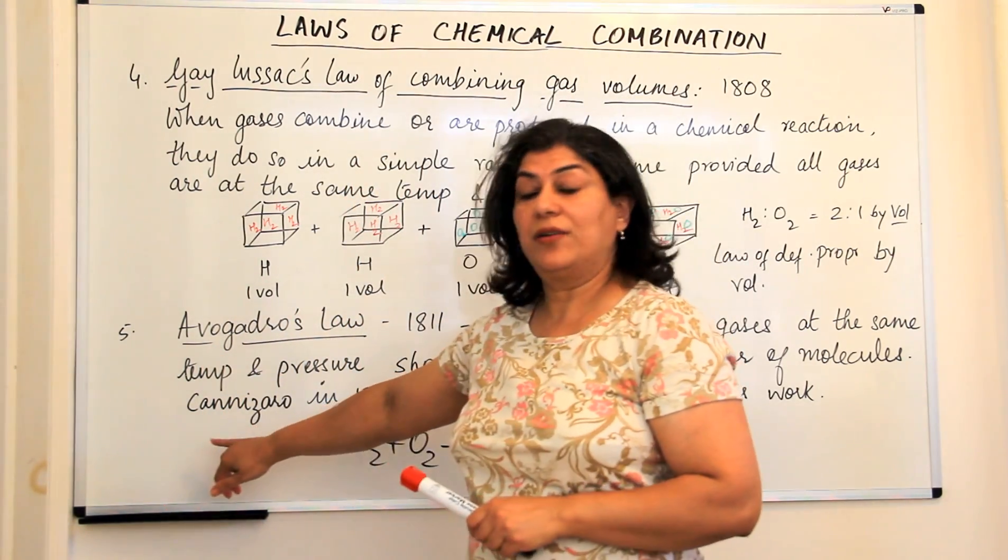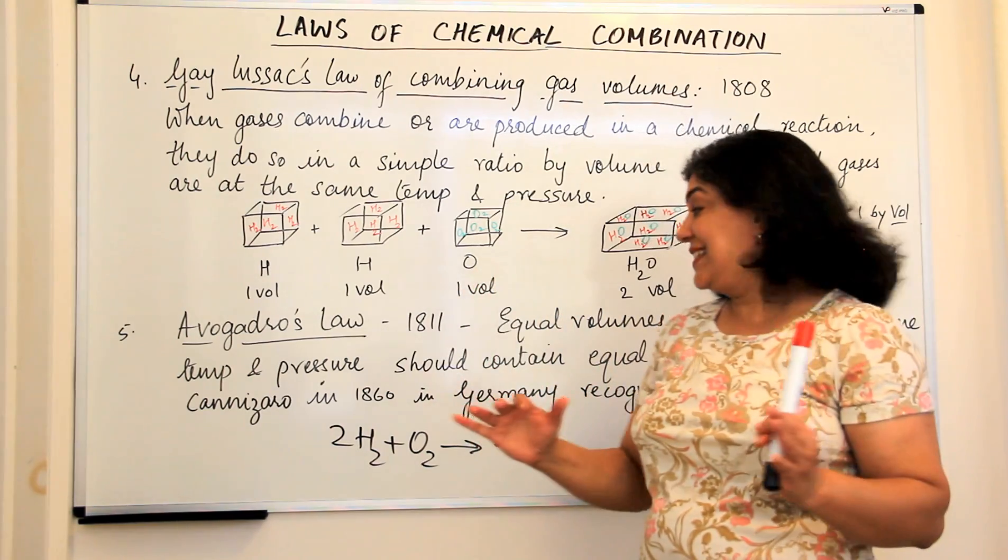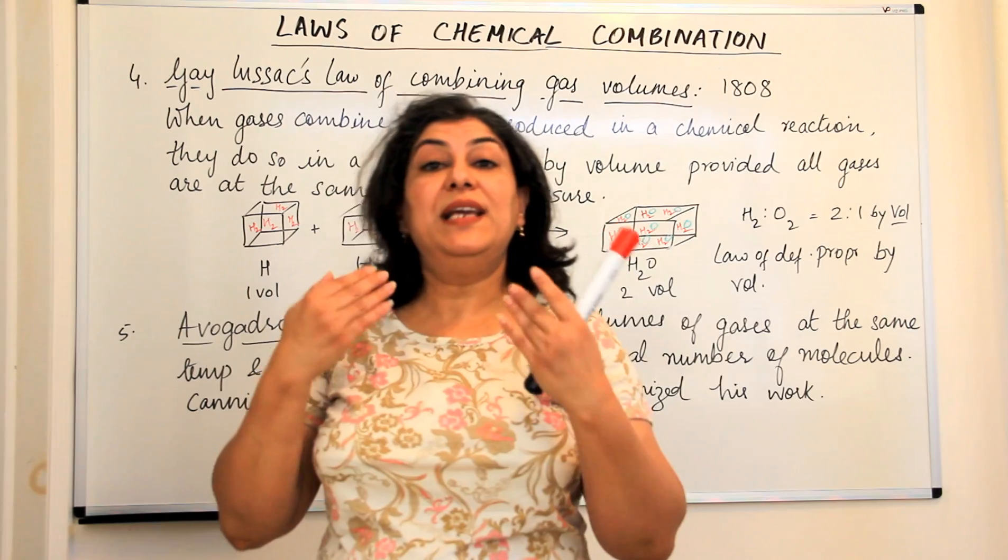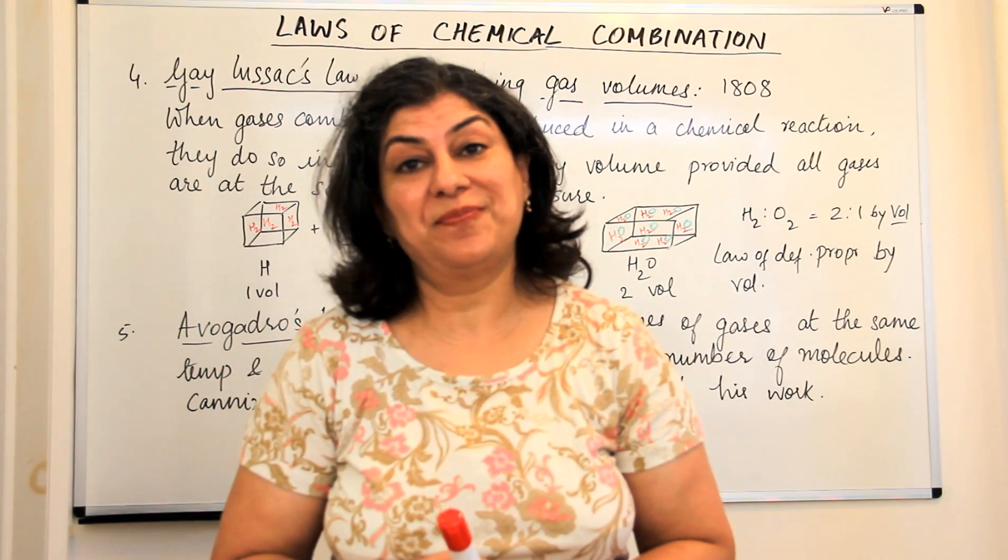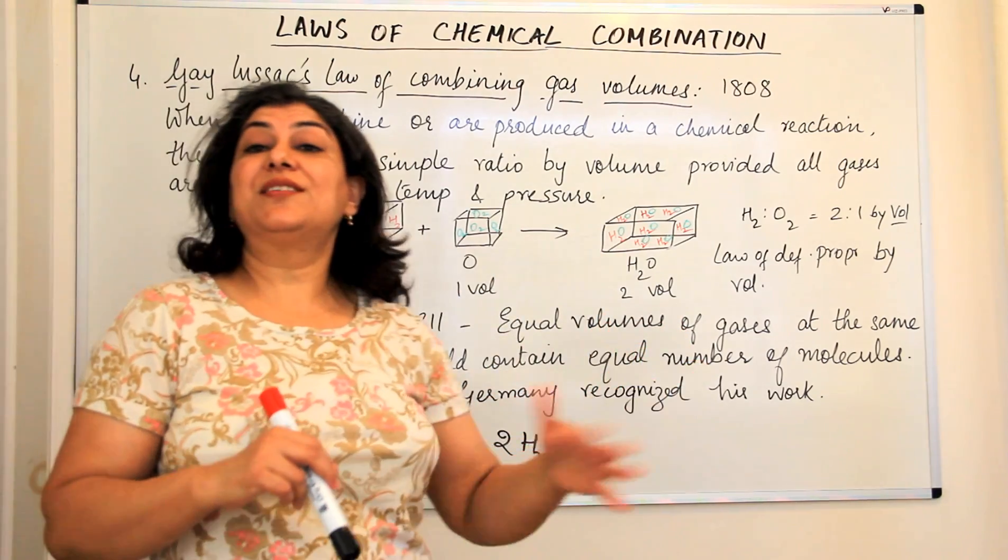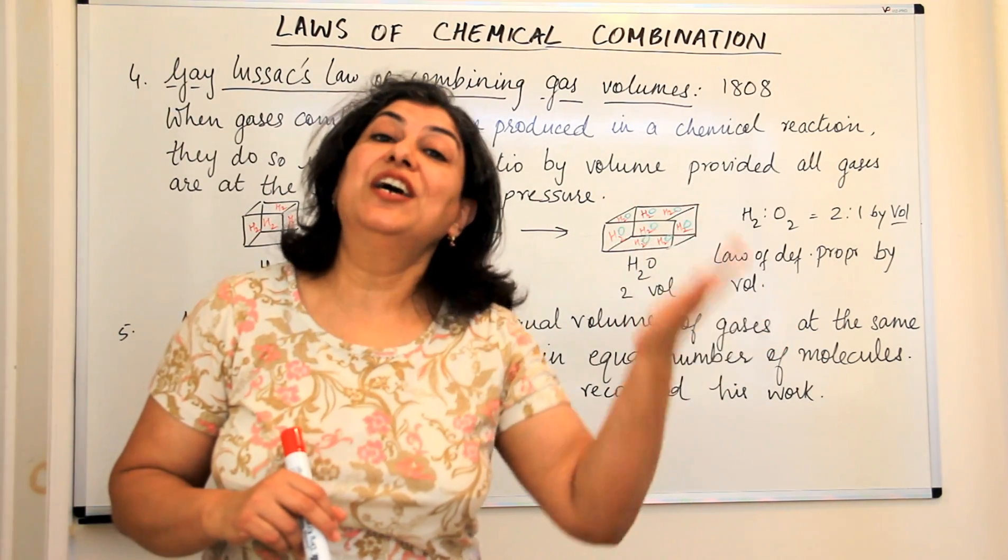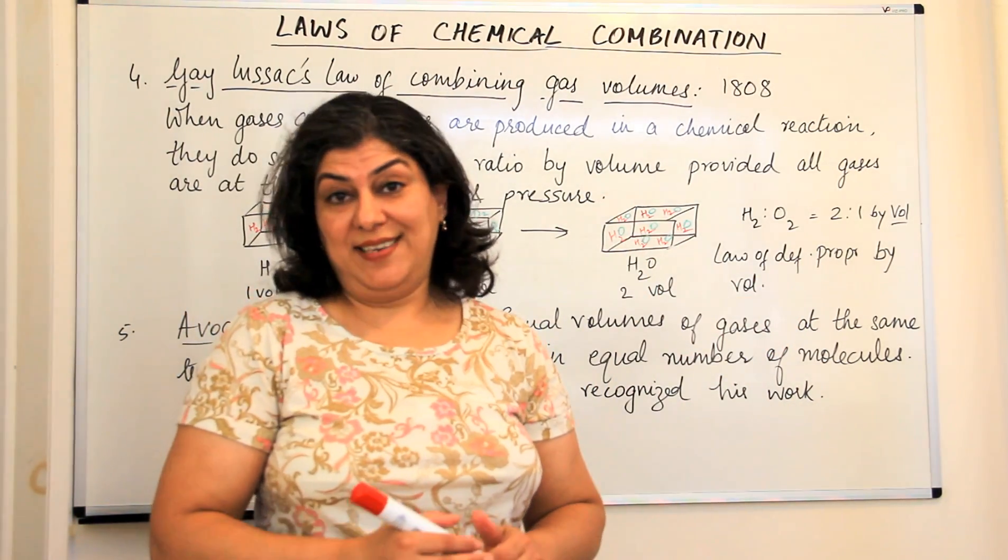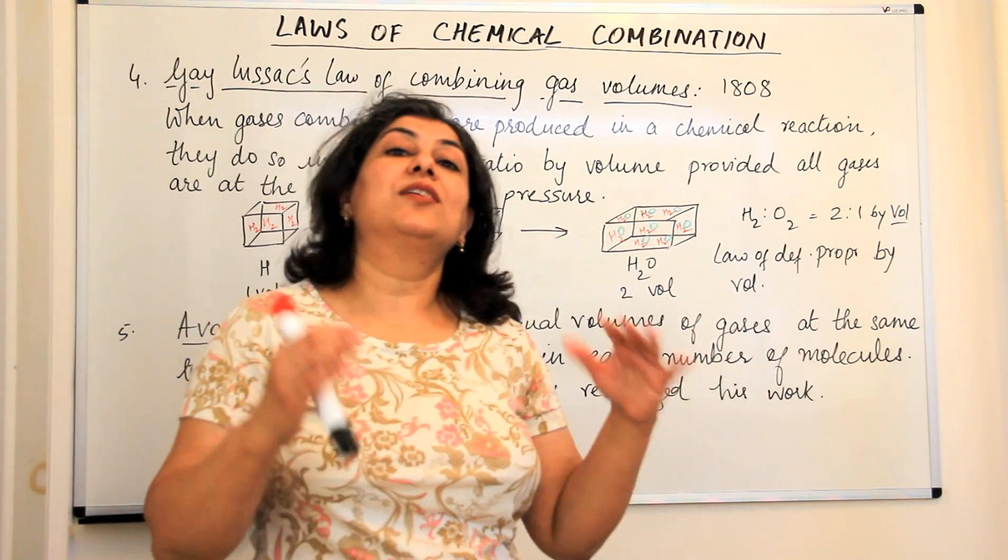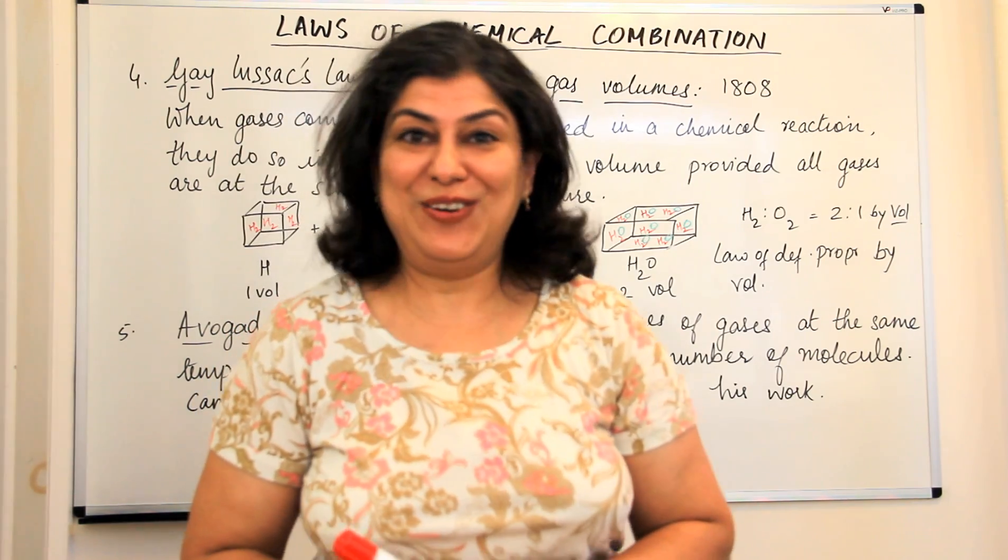the scientist Canizaro in 1860 in Germany recognized the work of Avogadro when he gave his studies. So Avogadro got his recognition 50 years after he had actually thought and proposed his idea. And it is only after that Avogadro's hypothesis got the name of Avogadro's law.